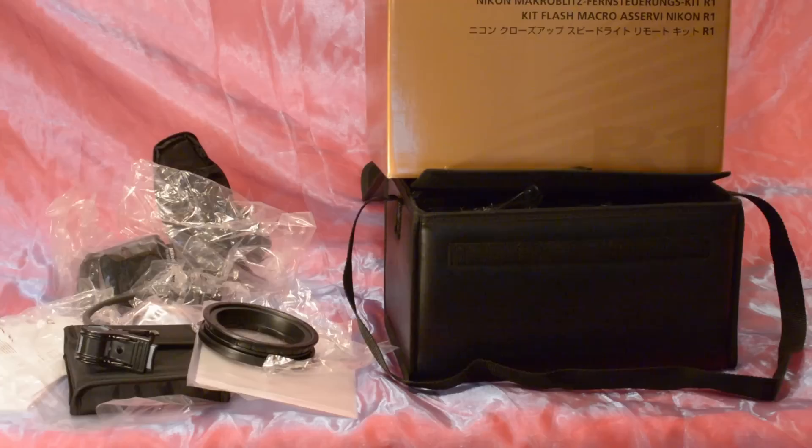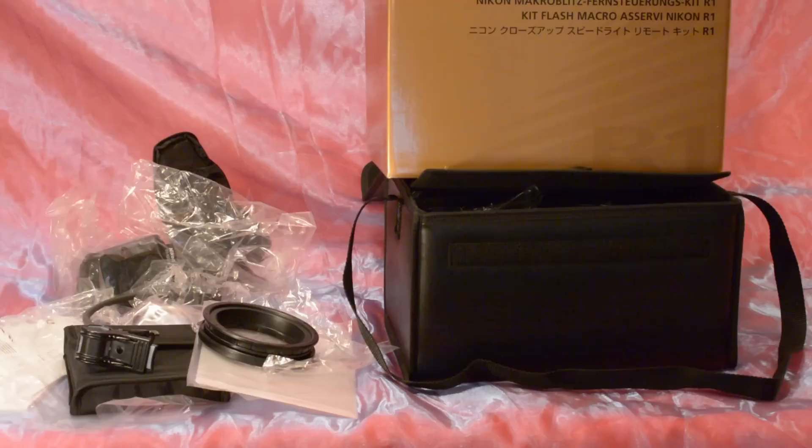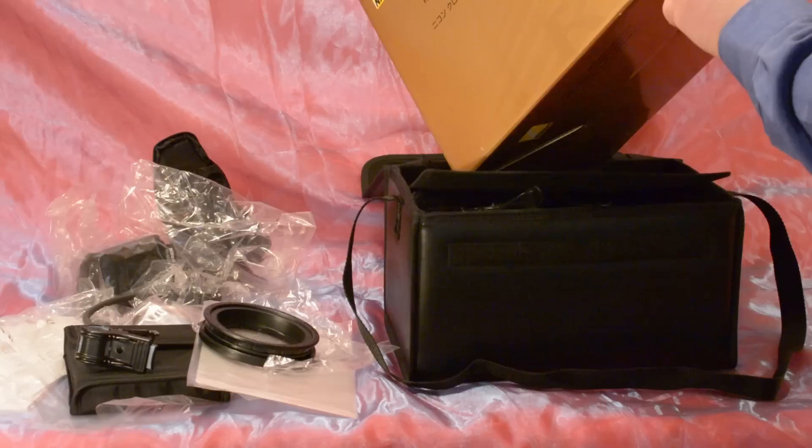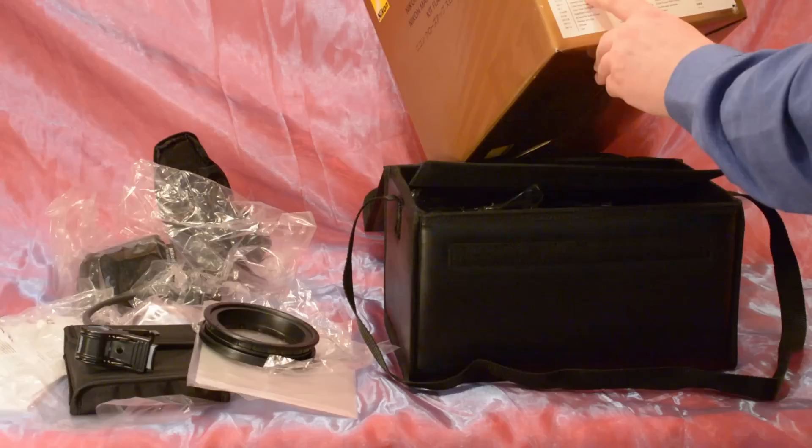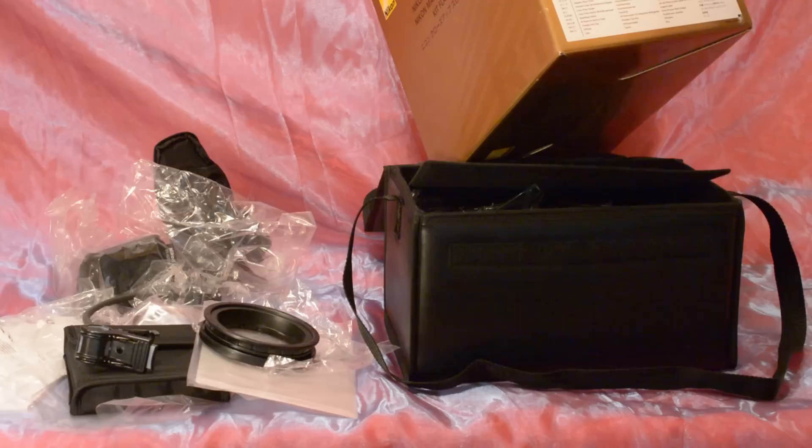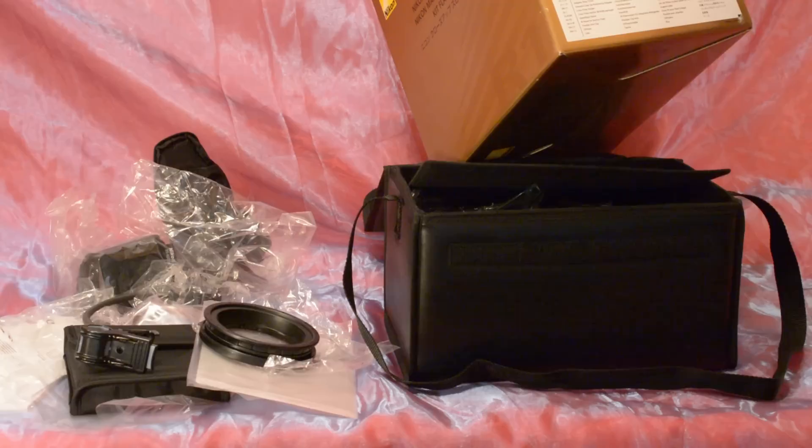The Nikon close up speed light remote kit. Supplied accessories include attachment rings 52mm, 62mm, I missed 67mm, 72mm, 77mm. The extreme close up positioning adapter, the colour filter holder, the colour filters, the speed light stand, the IR panel for the built in flash, the flexible arm clip, the diffuser, and the case.